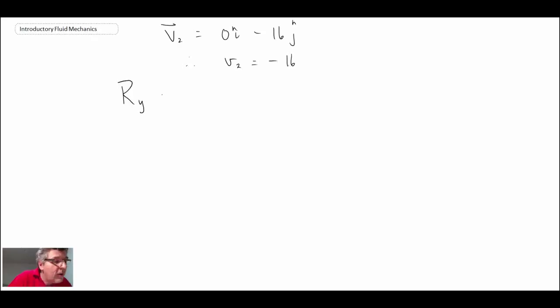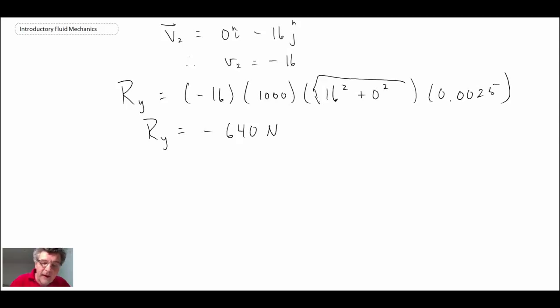Therefore, we write ry is minus 16 multiplied by the density of water is 1,000. Resolve the vector component there, the magnitude of the vector. That's 16 squared plus 0, and then the area. Doing all of that, we get ry is minus 640 newtons. It's a negative. What is that telling us? It's telling us that that is 640 newtons in the down direction.